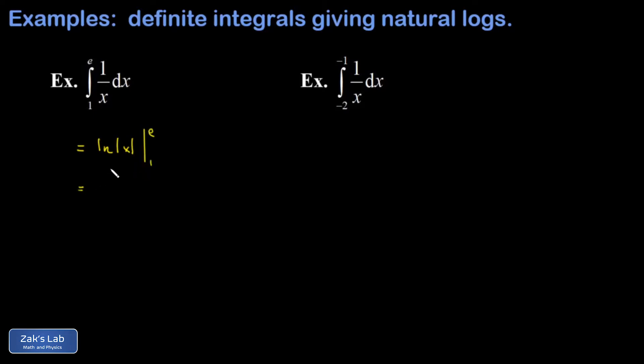In the first example, when I evaluate across the limits of integration, both of those numbers are positive so the absolute value doesn't really do anything there. The first term is natural log of e, which is one, and the second term is natural log of one, which is zero. This comes out to one.